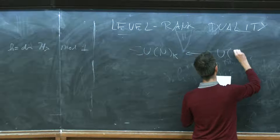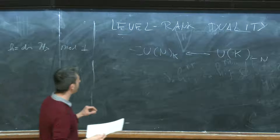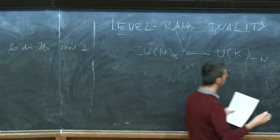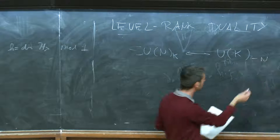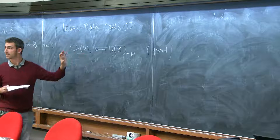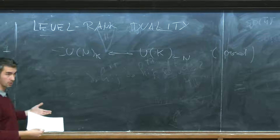These descriptions look different — the group is different, the level is different — but the quantum theory is the same. In particular, the spectrum of lines is the same, and all the correlators between the lines, if used in the dictionary, are the same. This duality can be proven because both sides are solvable, and you can see they are the same. In particular, what you can do is see that both descriptions lead to exactly the same chiral algebra, so everything you compute with it is going to be the same.